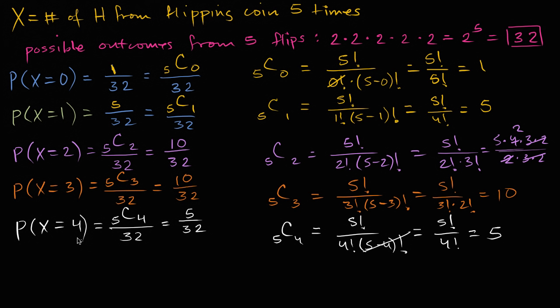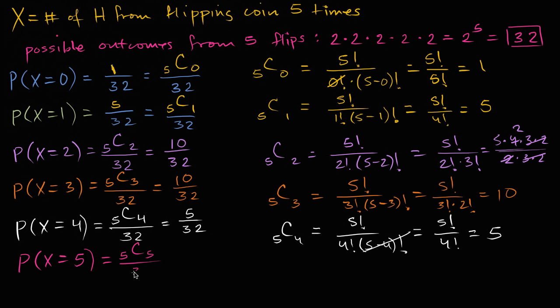You could reason through this: if you want four heads, you have one tail, and there are five different places to put that one tail. For P(X=5): five choose five equals five factorial over five factorial times zero factorial. Zero factorial equals one, so this simplifies to one. P(X=5) = 1/32.